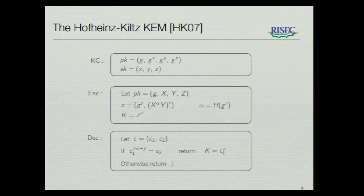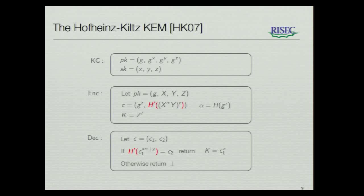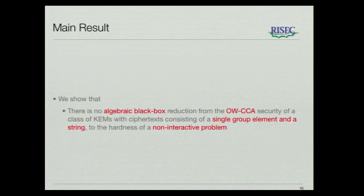Let's consider the Hofheinz-Kiltz KEM. This KEM will have an encapsulation of just two group elements, and we might want to try to apply a similar trick, hoping that the resulting KEM will still be secure. However, what we are showing is that this type of KEM cannot be proven IND-CCA secure, assuming you want a black box reduction and a non-interactive problem. More specifically, we show that there is no algebraic black box reduction from the one-way CCA security of a class of KEMs with ciphertext consisting of just a single group element and a string to the hardness of a non-interactive problem.